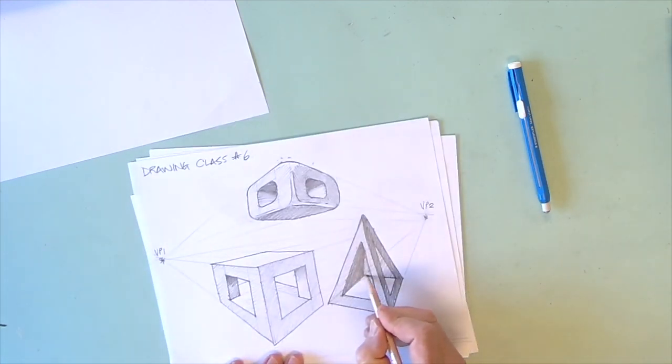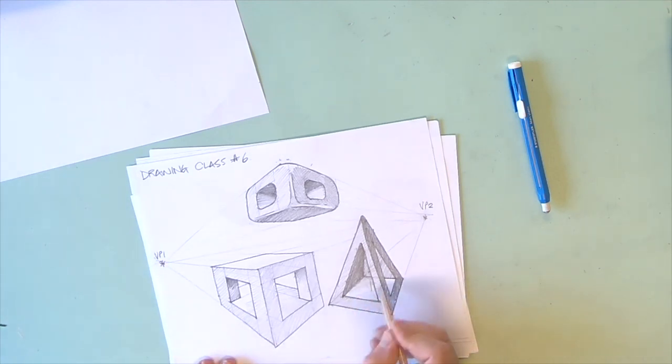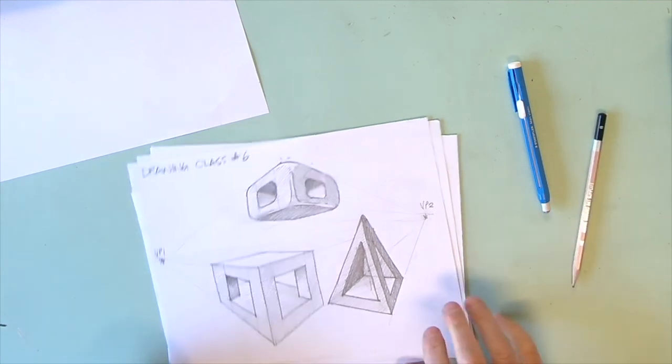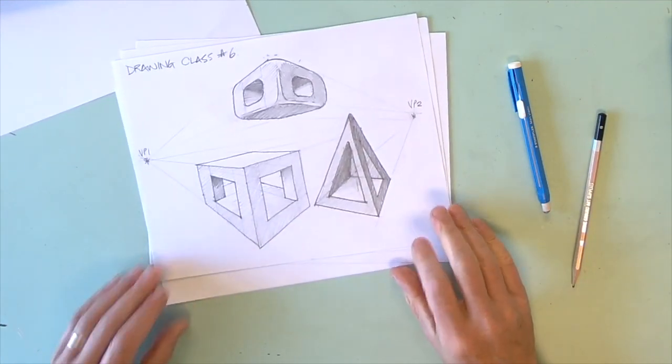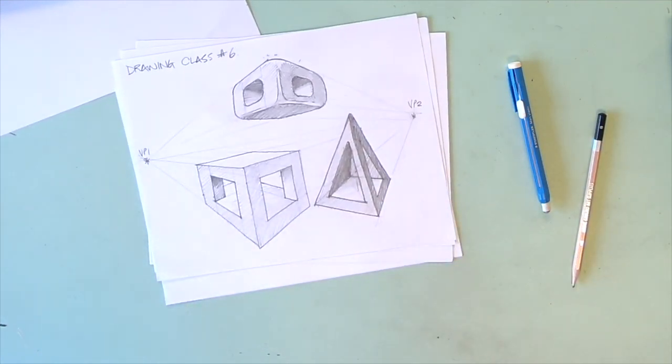Kind of wild objects. And then to make this a bit more 3D, I could add a little bit of shade in the back of the box. Because it's actually inside it. Okay. There are the three objects for drawing class number six.